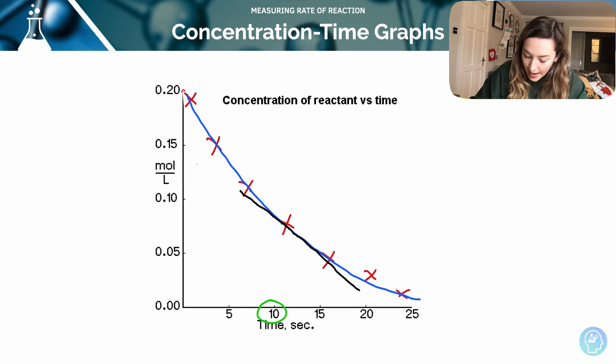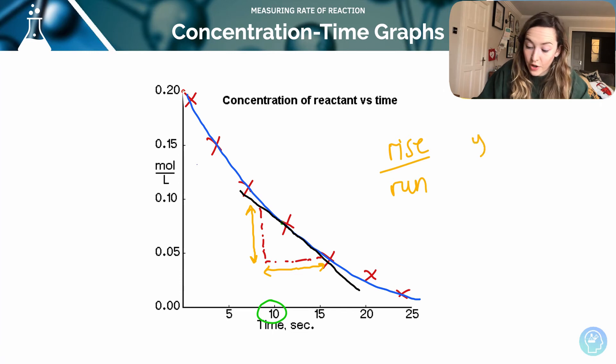So there's my tangent and I can work out my rise over run. I can take any point on that and work out how much change I've seen in my rise - so my moles per liter here - over how much time has elapsed for that line. Remember, rise over run, which is the same as putting your value of the y-axis over your value for the x-axis, and that will give you the rate.